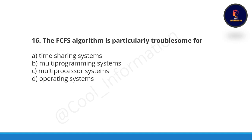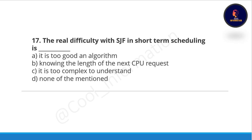Question sixteen: the first come first serve algorithm is particularly troublesome for what? Options: time sharing system, multi-programming system, multi-processor system, or operating system. The correct option is option A, time sharing system.